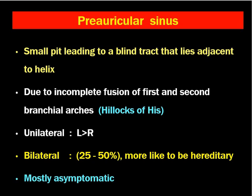This condition is more common unilaterally than bilaterally, and it is more common on the left side than on the right side. Most congenital conditions are more common on the left side. In around 25 to 50% of cases we may get bilateral preauricular sinus, and this is more likely to be a hereditary condition transmitted from generation to generation. The sinus is mostly asymptomatic and does not cause any problem. When pinched, it may lead to sebaceous secretions from the pit.